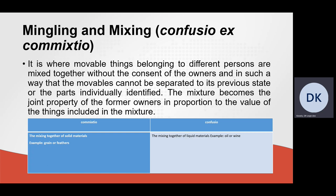Another example of original acquisition of ownership is confusio et commixtio, also known as mingling and mixing. This is where movable things belonging to different persons are mixed together without the consent of the owners, and in such a way that the movables cannot be separated to their previous state or the parts fully identified. The mixture becomes the joint property of the former owners in proportion to the value of the things included in the mixture. Examples include the mixing of grain, feathers, or liquid materials.